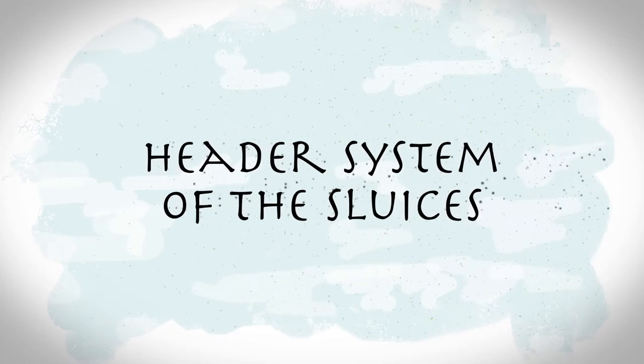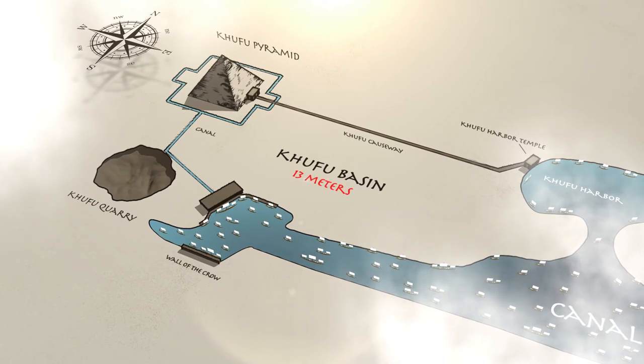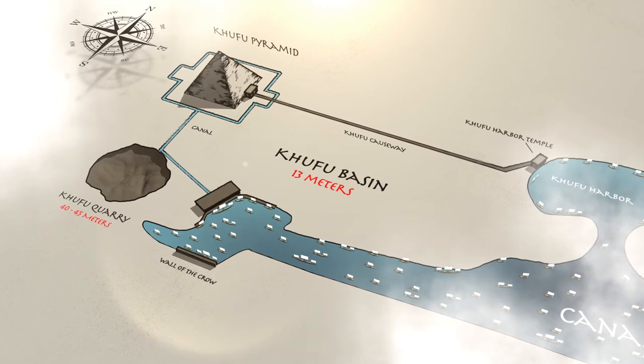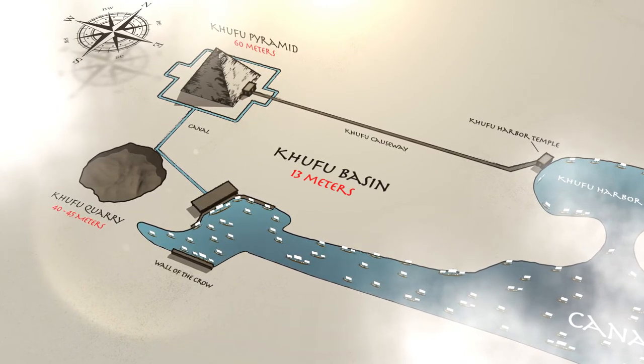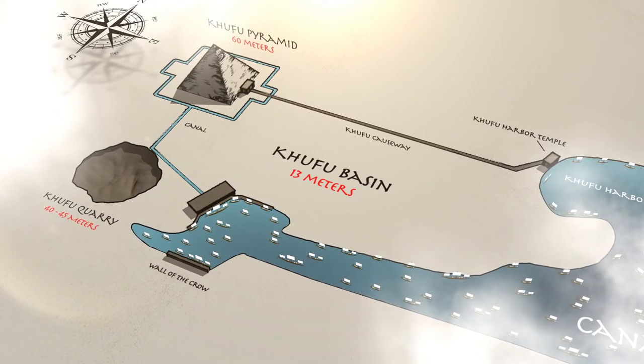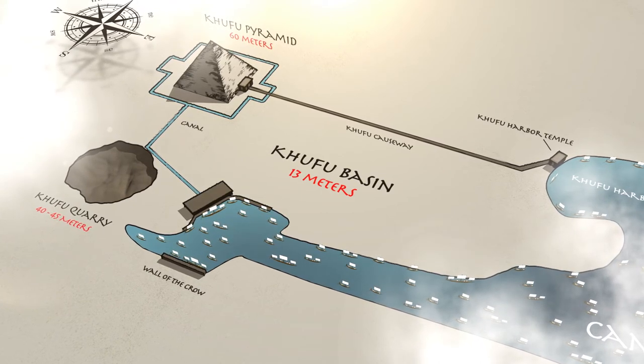The water elevation in the Khufu basin was 13 meters above sea level. The elevation of the Khufu quarry was 40 to 45 meters above sea level. The base of the pyramid was 47 meters higher than the water table in the Khufu basin. Sluices were used to manage the elevation change.